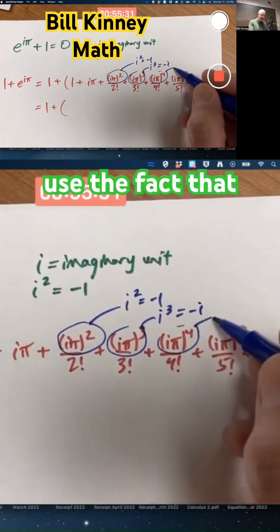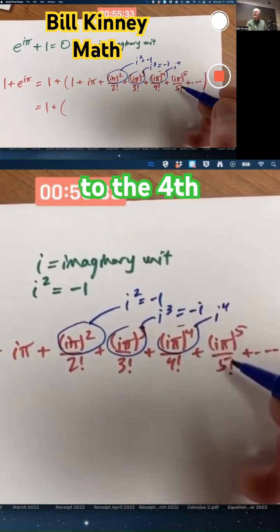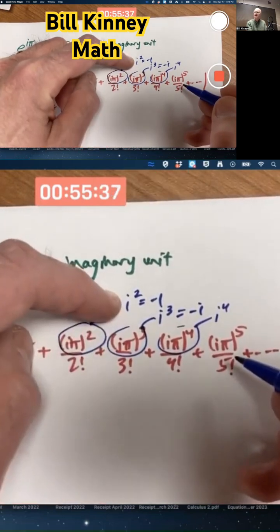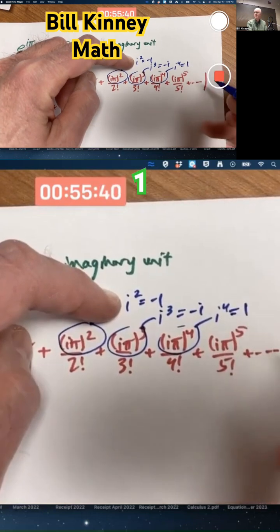In this one, we'll use the fact that i to the fourth is i squared squared, negative 1 squared, positive 1.